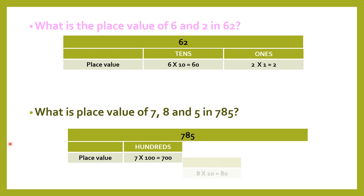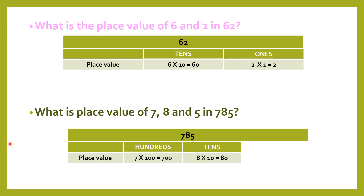Coming to another example: what is the place value of 7, 8 and 5 in 785? First we are going to identify the position of each digit. 7 is present in the hundreds place, 8 is present in the tens place, and 5 is present in the ones place.